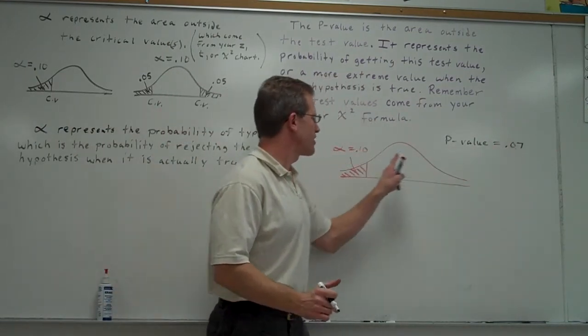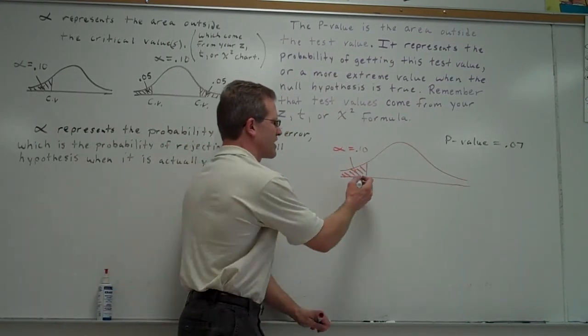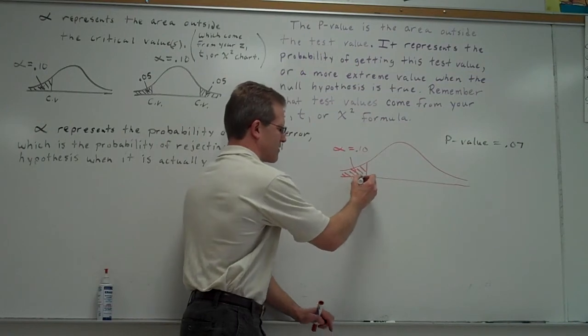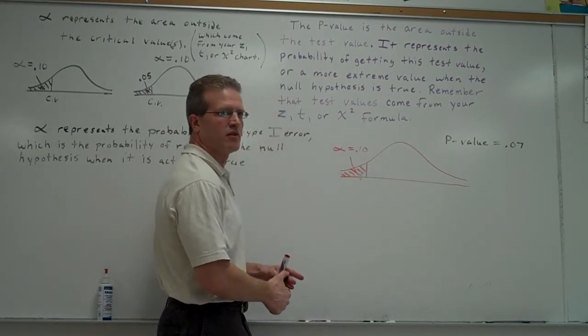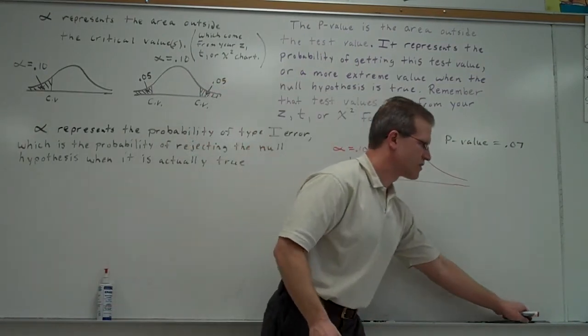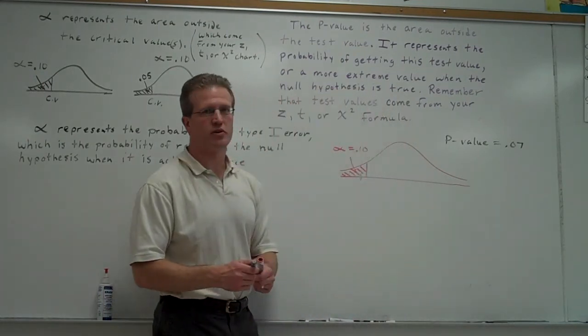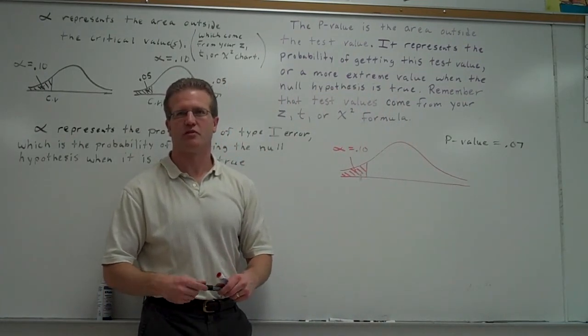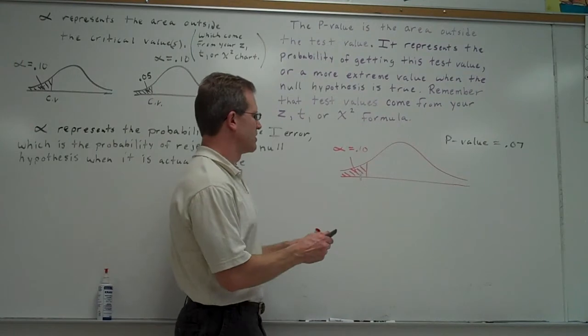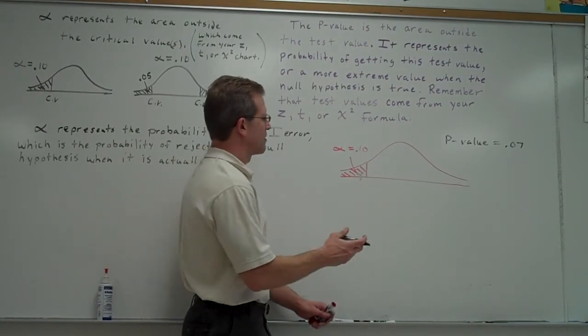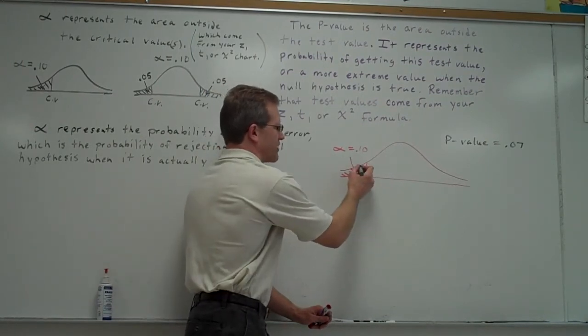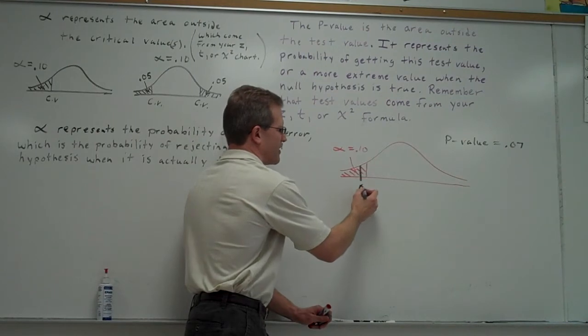Why is this 0.07 being smaller than 0.10 telling me that the test value's got to be in here? Was 0.07 bigger or smaller than 0.10? Smaller. Okay, it's smaller. So 0.07's got to be a smaller area, right? Here's my test value.